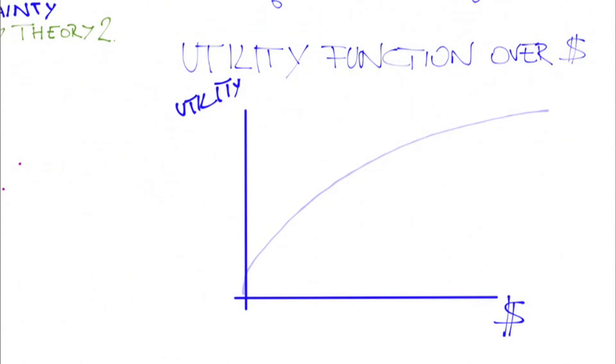An expected utility maximizer's risk preferences are embodied in his utility function over money, sometimes called a Bernoulli utility function. Because more money is better than less, this utility function is increasing. For example, it might be square root of x.